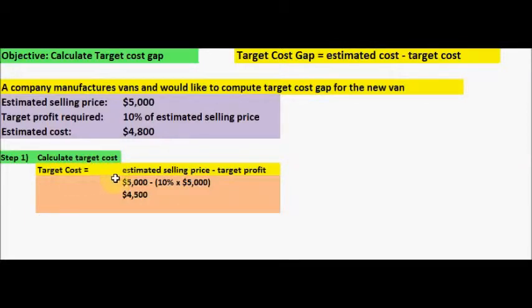Target cost is calculated by taking the estimated selling price minus target profit. So the estimated selling price of $5,000, take $5,000 and you minus it with the target profit. The target profit is 10% of estimated selling price. So you take 10% and you multiply that with the $5,000 estimated selling price, and basically you subtract the estimated selling price minus target profit to get the total target cost of $4,500.